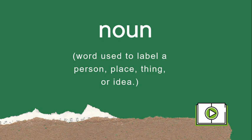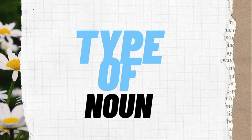Person — like me, a teacher, and you, a student. Place — home, school, zoo. And then thing — it's easy: chair, laptop, microphone. Another category is idea. How about happiness? And health — yes, health.